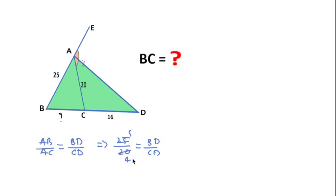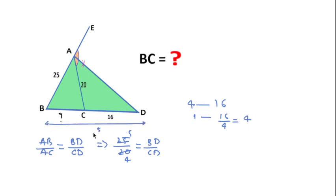CD is 4 units and is given as 16, so 16 divided by 4 equals 4 — each unit is 4. BD corresponds to 5 units, so BD equals 5 times 4 equals 20. Since BD is 5 units and CD is 4 units, BC equals BD minus CD equals 5 minus 4 equals 1 unit, so BC equals 4. Thanks for watching this video — please like, share, and subscribe to this channel.